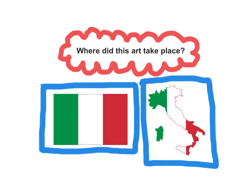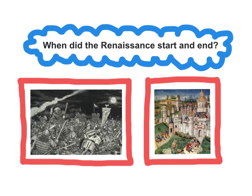The Renaissance was believed to have started in cities like Florence. It was considered to be the bridge between the Middle Ages and modern history. It was a time in Europe that started in the 14th century and ended in the 17th century. It started as a cultural movement in Italy and eventually spread all over Europe, changing the world.